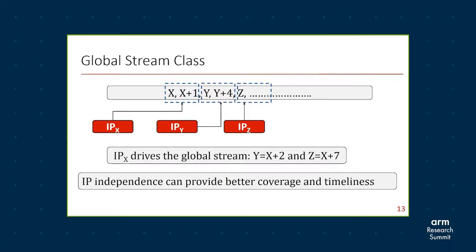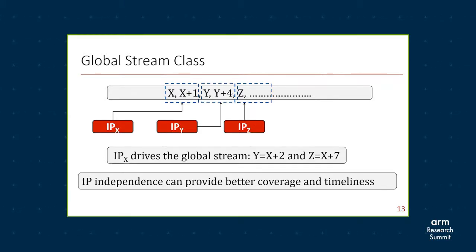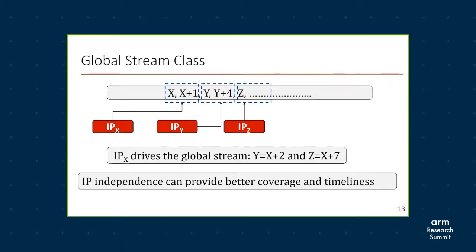Next, we classify an IP into a global stream class. The global stream class corresponds to an IP that drives all other IPs within a particular region, such as an OS page. In this example, X and X plus one are driven by IP-X, Y and Y plus four are driven by IP-Y, and Z followed by something is driven by IP-Z. If per-IP-based prefetch like the CS class or complex stride class can help, to improve timeliness and coverage further, on a first access to IP-X we should prefetch the entire region irrespective of the IP. In this case, IP-X becomes a global stream IP that drives all other IPs in that particular region.